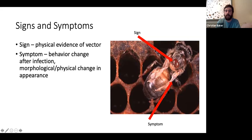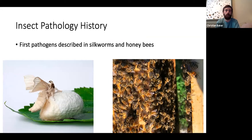Let's get a quick history on insect pathology. The first pathogens were described in silkworms and honeybees, both of which are very beneficial insects. Silkworms produce silk and honeybees give us honey and help pollinate crops.